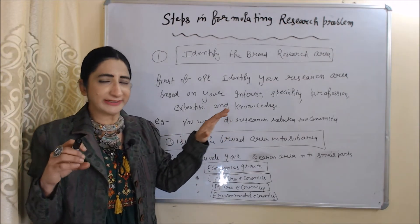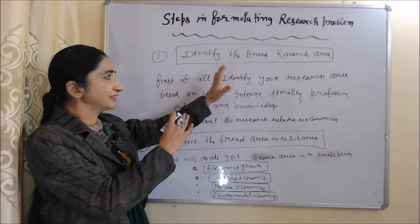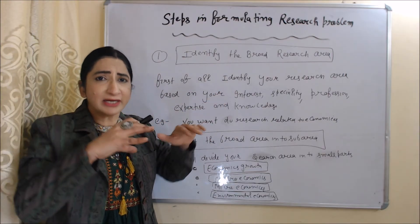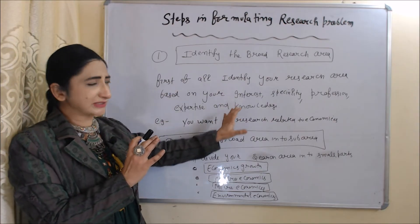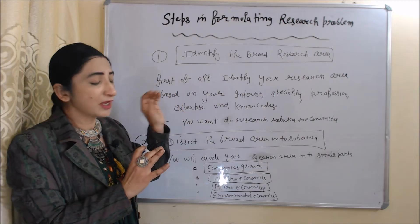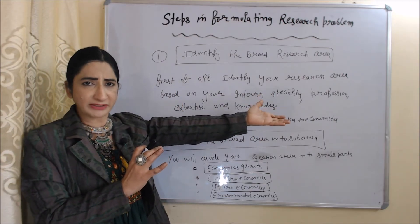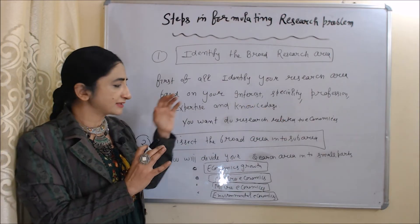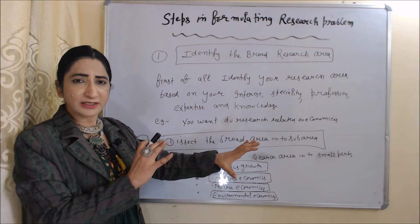The first step in formulating a research problem is to identify the broad research area. First, identify your research area based on your interest, speciality, profession, expertise, and knowledge. For example, if you want to do research related to economics, then your broad research area is economics.